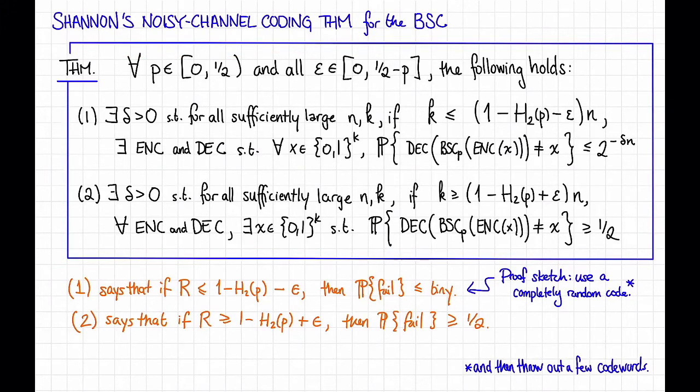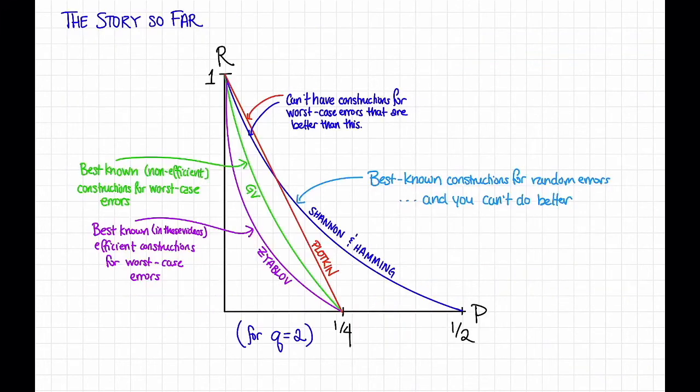This theorem and its proof might seem somewhat familiar. Both the quantitative statement and the argument itself might remind you of the Hamming bound. And indeed, this result basically exactly lines up with the Hamming bound. In a bit more detail, here's the story so far. Here's how Shannon's theorem on the binary symmetric channel fits into all the results we have about worst case errors.